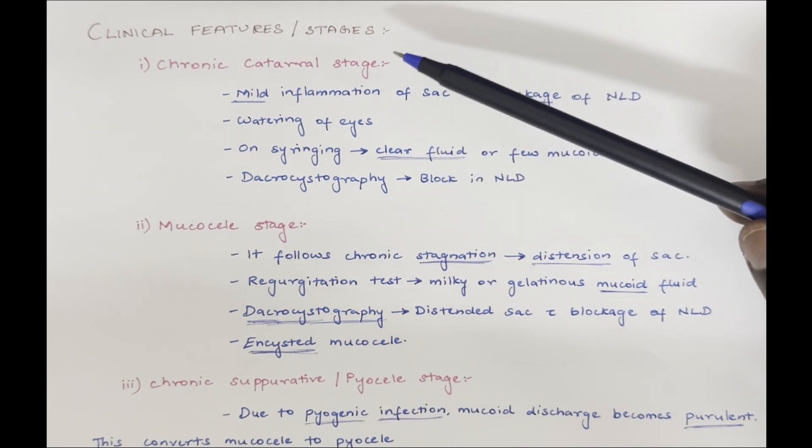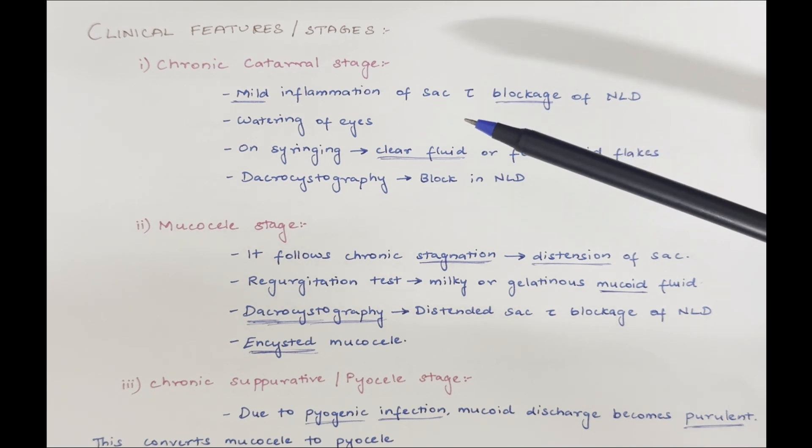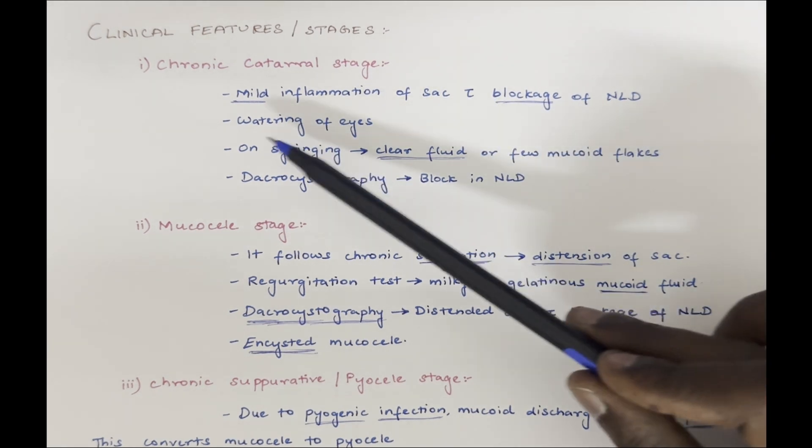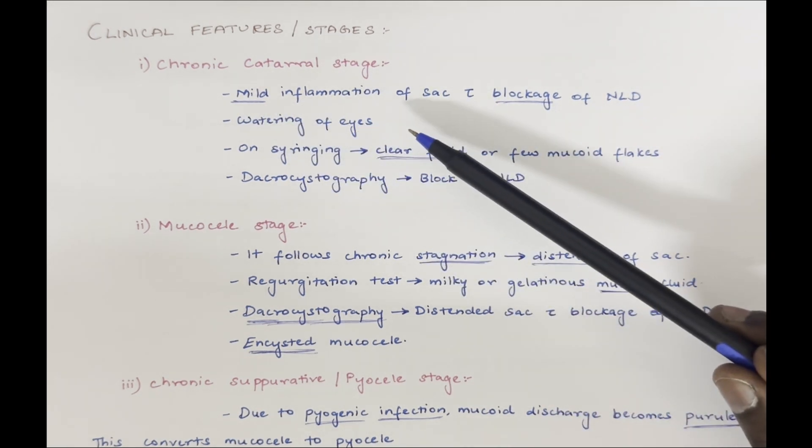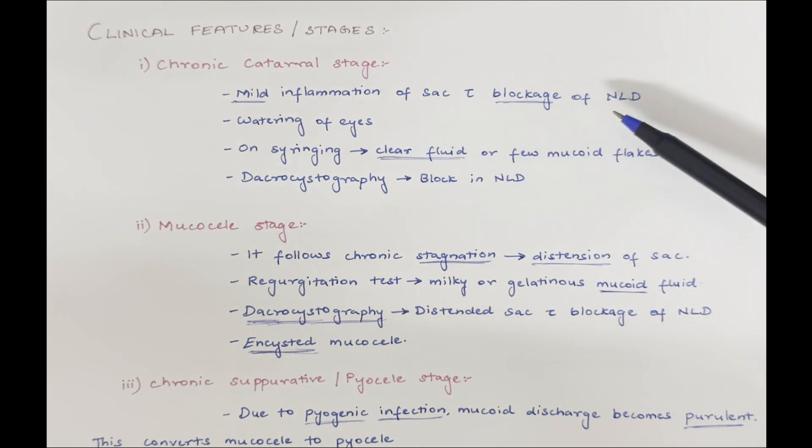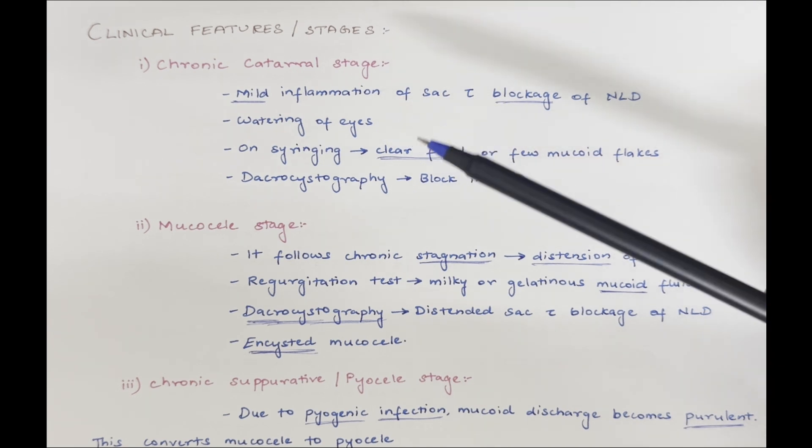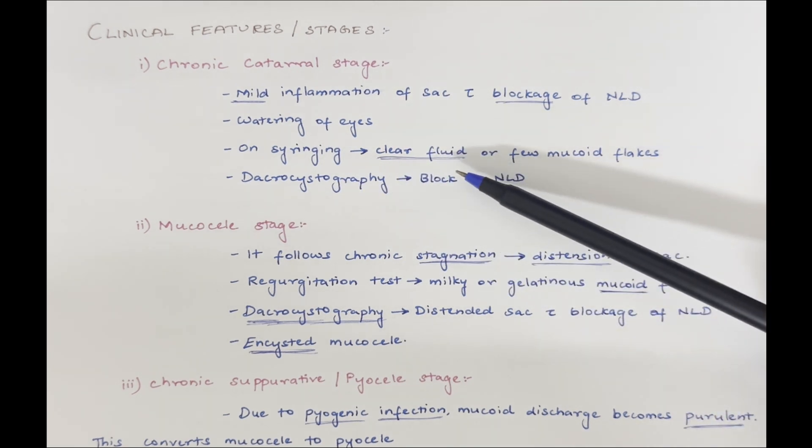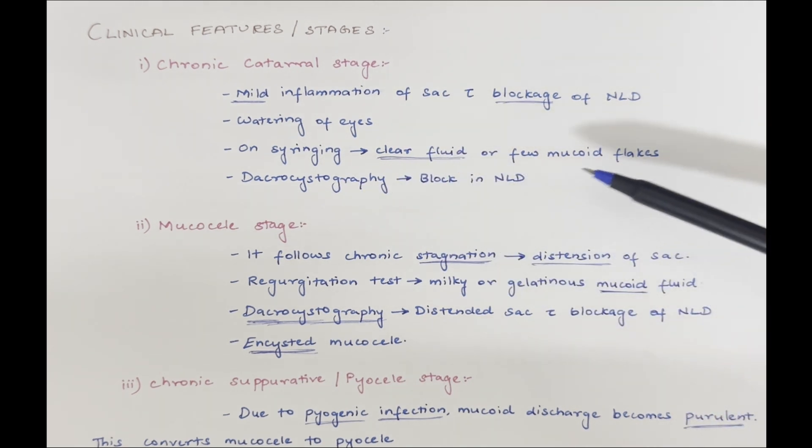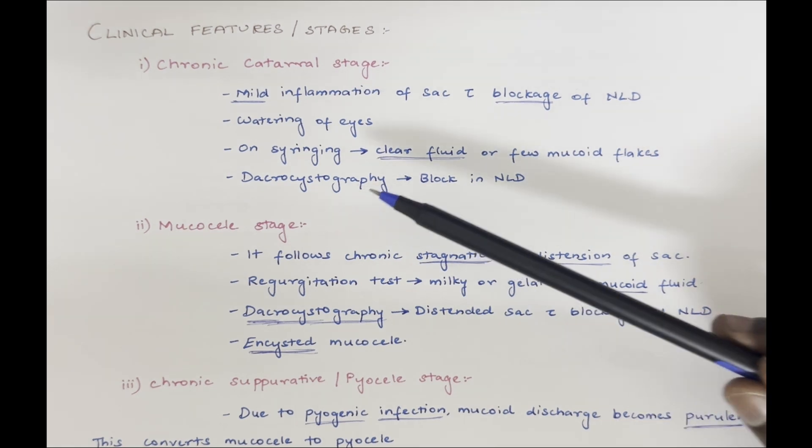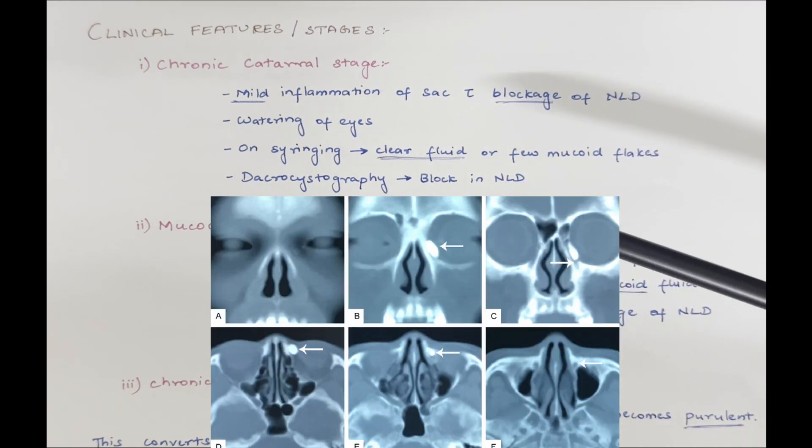In chronic catarrhal stage, there is mild inflammation of the sac with blockage of nasolacrimal duct. We can also see watering of the eyes and on syringing, we will find clear fluid with few mucoid flakes. On dacryocystography, we can see there is a block in the nasolacrimal duct.